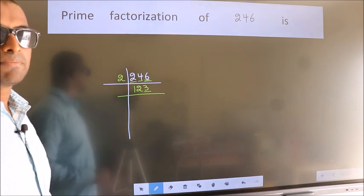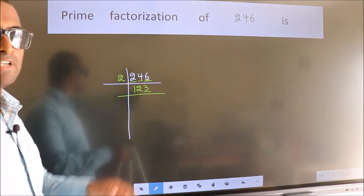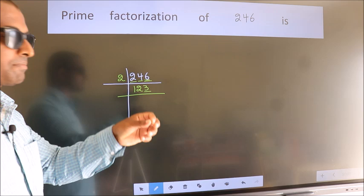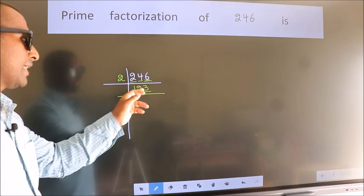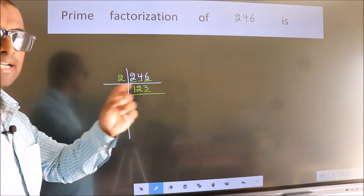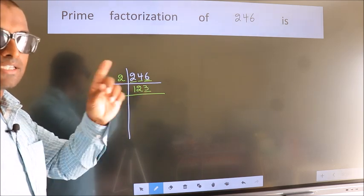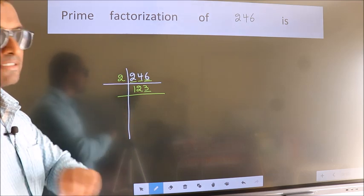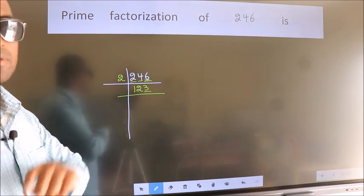To check divisibility by 3, we should add the digits. 1 plus 2 plus 3, we get 6. Is 6 divisible by 3? Yes. So this number is also divisible by 3.